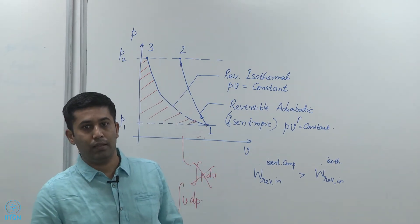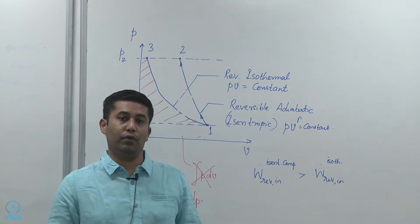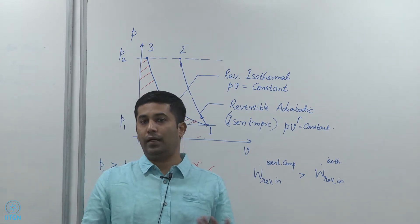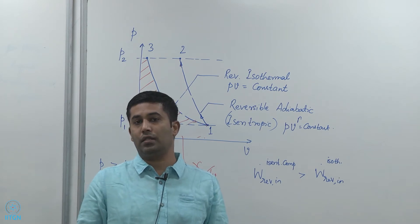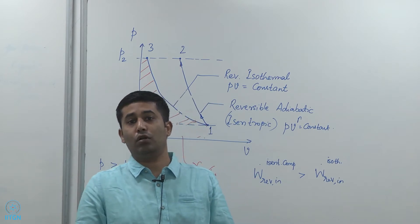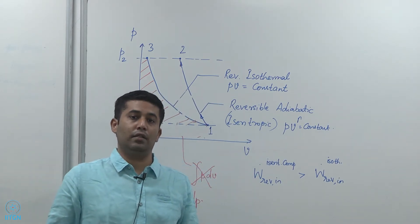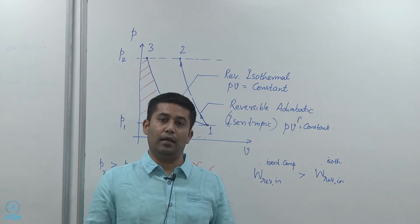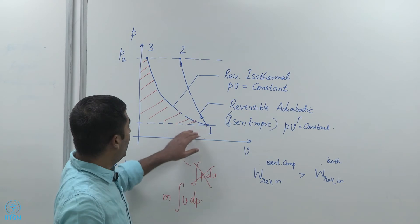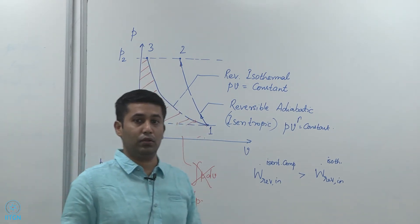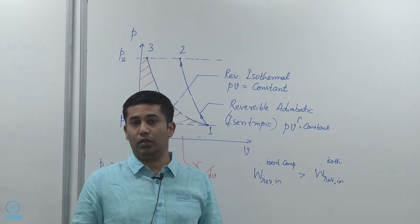The other constraint is that because the process is isothermal, we would like very quick heat transfer between the system and the surroundings, such that there is no increase in temperature as we compress the gas. That is only possible if we have very large areas for heat transfer, both of which are impractical in everyday engineering devices. So although isothermal compression has the minimum work requirement, it is very difficult to achieve in everyday life.